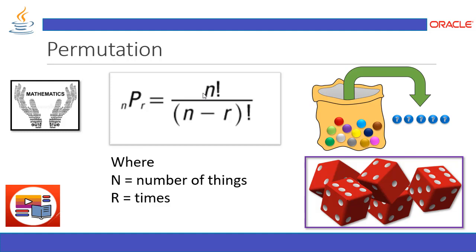The formula for permutation is: factorial(n) divided by factorial(n minus r), where n is the number of things and r is the number of times you are going to access it. Another good example is a dice — one dice has six sides because it's a cube, and all six sides show a number. When you throw a dice, there is a possibility of a specific number coming up. This is what permutation is about — it comes from the concept of probability or possibility.